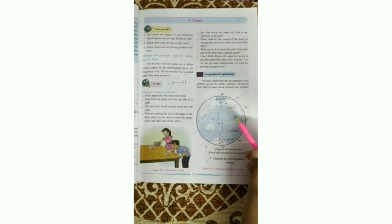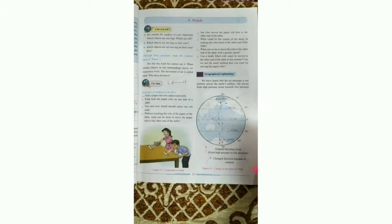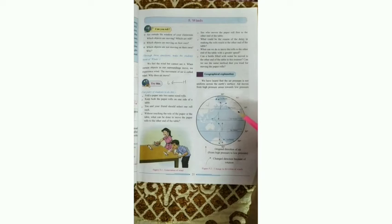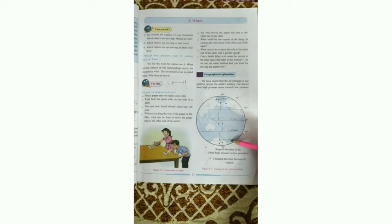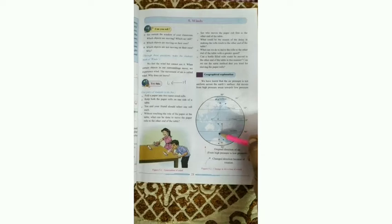Let's look at this figure showing the change in direction of winds. On the Earth's surface there are low pressure belts as well as high pressure belts, because air pressure is not uniform across the Earth's surface. You can see the moving air — from high pressure it moves towards low pressure. In this belt you can see that on the upper side there is low pressure, and below is high pressure, so air moves from high pressure towards low pressure. This is the direction of winds.